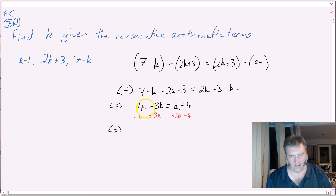Looking at that now, 4 minus 4 is 0. Negative 3k plus 3k is also 0, so the left-hand side is 0. And on the right-hand side, I am going to have 4k. If I divide each side by 4, it's pretty obvious that k has to equal 0.